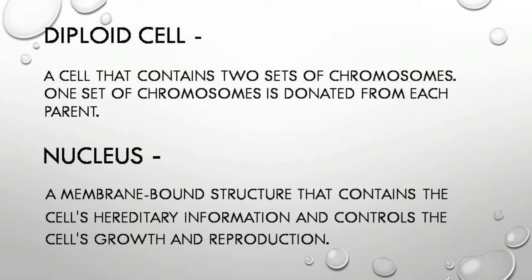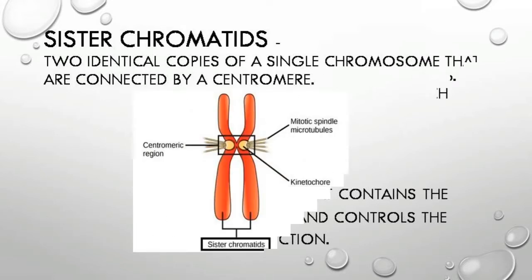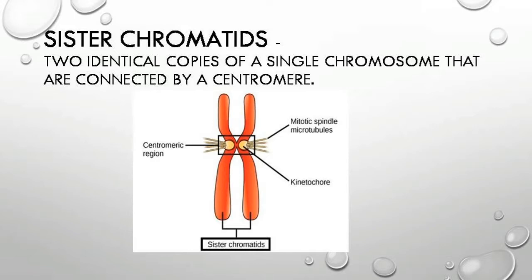Diploid cell: a cell that contains two sets of chromosomes, one set donated from each parent. Nucleus: a membrane-bound structure that contains the cell's hereditary information and controls the cell's growth and reproduction.